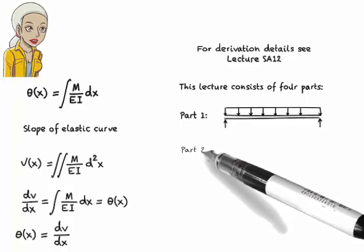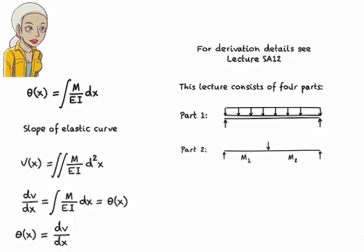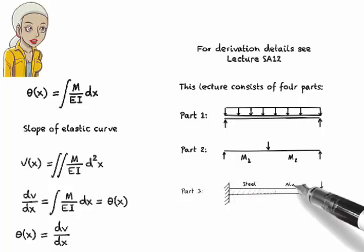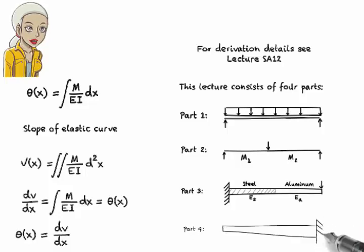In part one, I'm going to apply this method to a beam having a constant EI and a continuous bending moment equation. In part two, I'm going to show how to solve problems involving more than one bending moment equation. That is, how to handle beams having piecewise continuous bending moment. In part three, I will consider a case where the beam is made of aluminum and steel, each having a unique modulus of elasticity. Finally, in part four, I will show how a beam with a variable moment of inertia can be handled using this method.